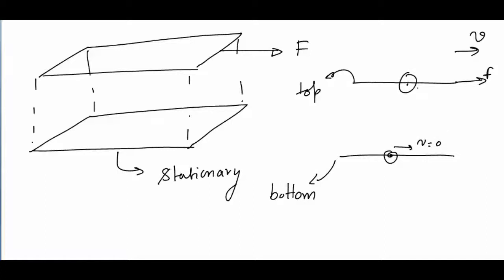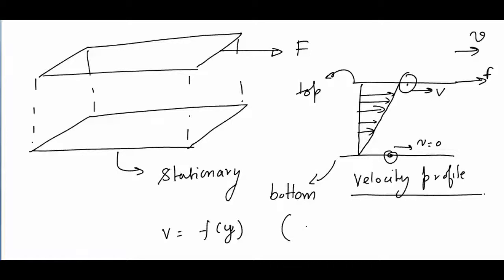Velocity of the fluid at this point will be V. So as I can see, there will be a velocity gradient or change in velocity with Y. So this type of diagram will come into picture, which is known as velocity profile. Velocity profile is the relation between velocity and Y. Velocity is in X direction.